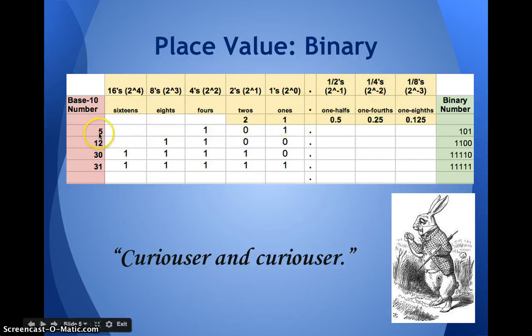A number like five is one set of four and one set of one. There are no twos, so we put a placeholder zero. Four plus one is five, and the binary number would look like this. Twelve is an eight plus a four, and that's the whole thing, and then two placeholder zeros, 1100. You can take a look at 30 and 31 on your own if you need a little more of a refresher. Alright, so far so good.